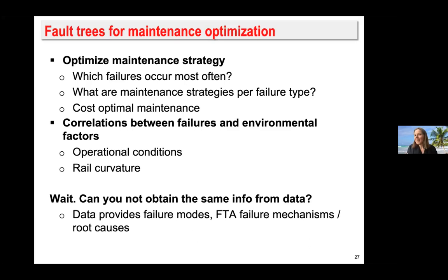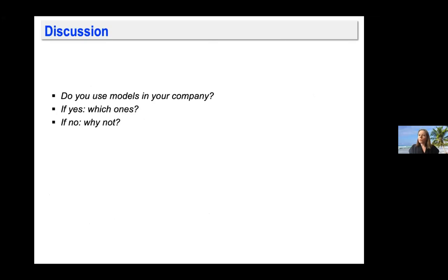You could argue: why do I need fault trees if I can obtain all information from data? Not always, because not everything appears in your data — if you don't know you should measure something, it won't be there. That is why fault trees, by systematically refining system failures into smaller failures, can help capture failure modes that data alone would miss.